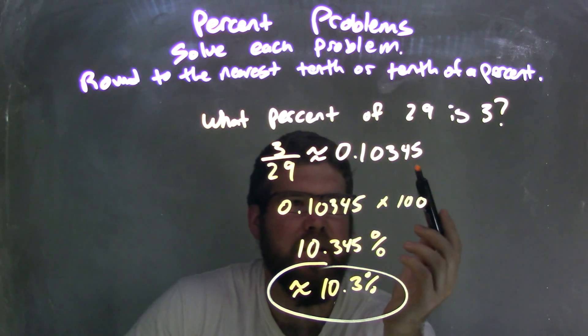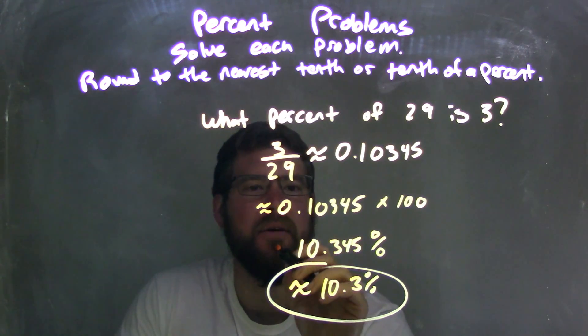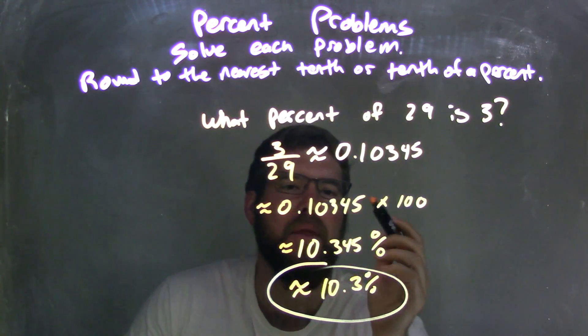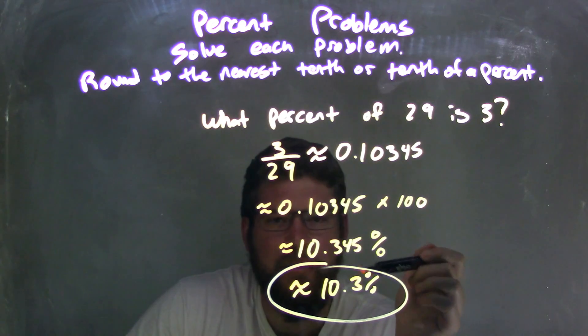I then multiplied that by 100 to get 10.345 percent, and then I had to round it in the last step.